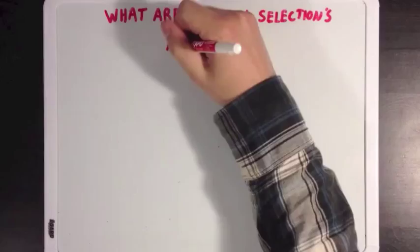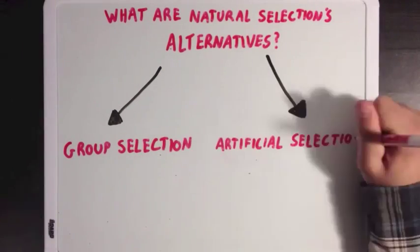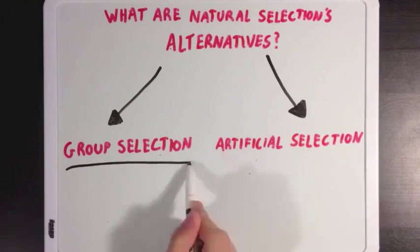What are natural selection's alternatives? Well, we're going to talk about two today, group selection, and also artificial selection. So, let's start with group selection.